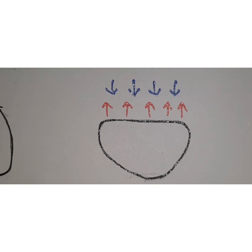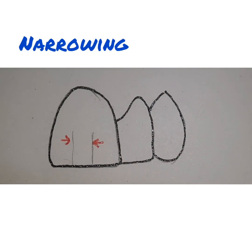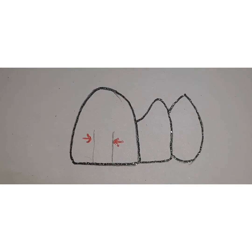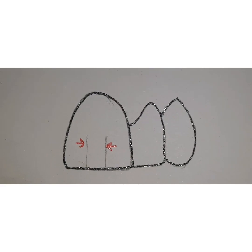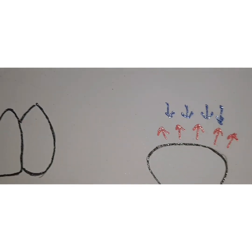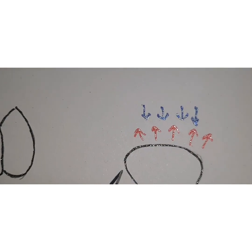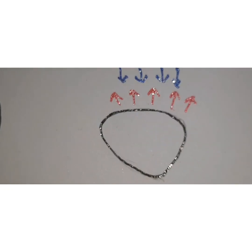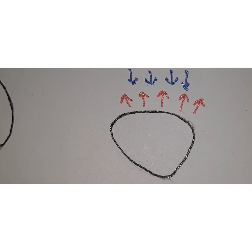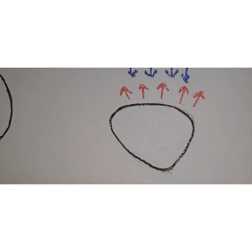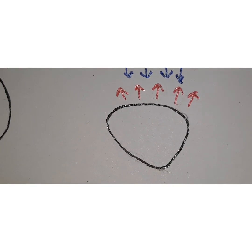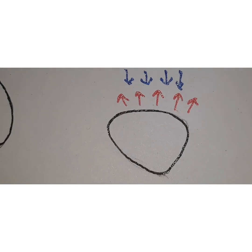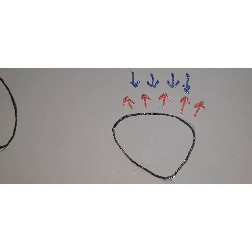To narrow the restoration or crown, displace the line angles more mesially — towards the midline — and increase the convexity of the facial outline. Highlight the texture with vertical lines and ridges, increase the facial embrasure, and add aesthetic staining to the shadow and proximal aspects. This makes the restoration appear narrower than it actually is.